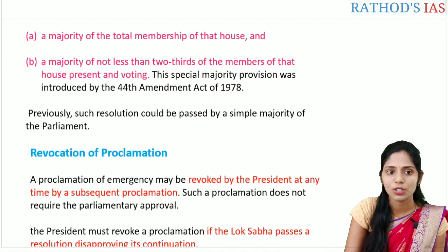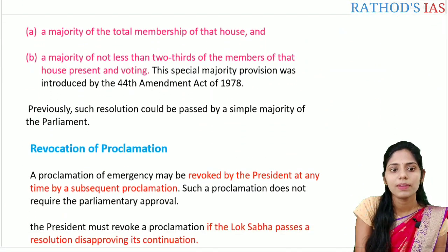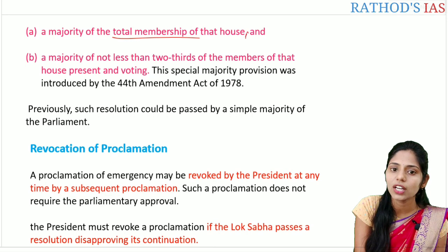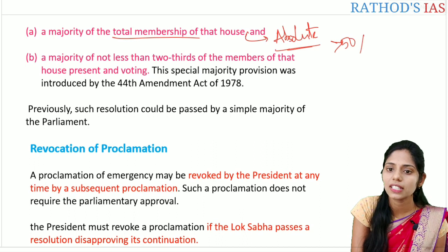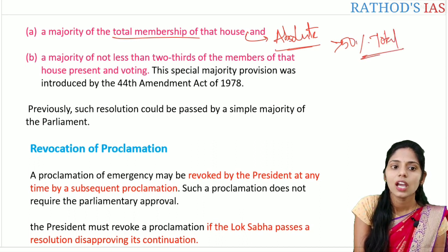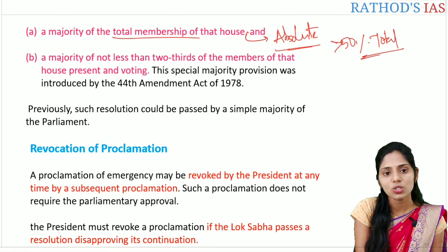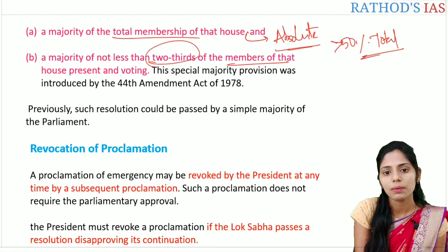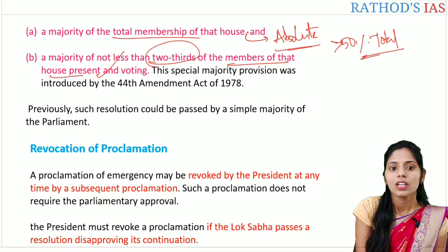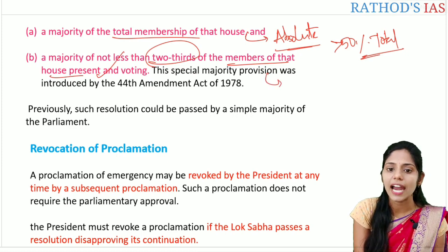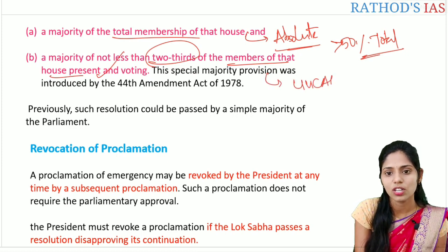The special majority is defined as the majority of the total membership of that house — absolute majority, meaning more than 50% of total membership — and also a majority of not less than two-thirds of the members of that house who are present and voting. This special majority requirement was added through the 44th constitutional amendment act of 1978.